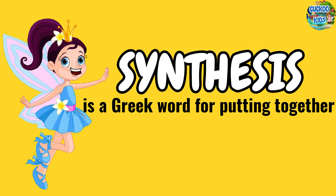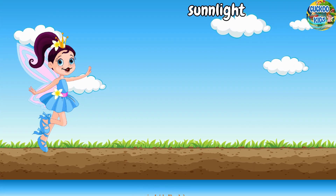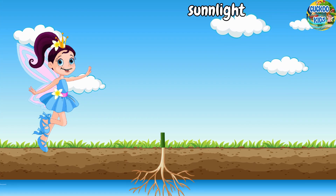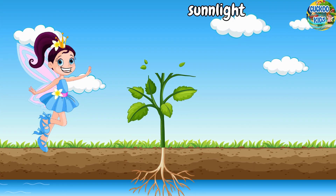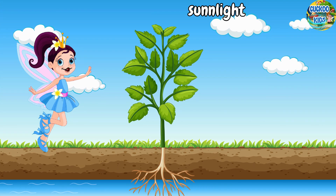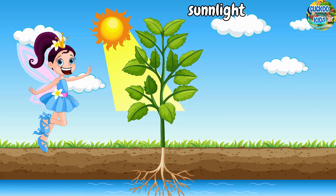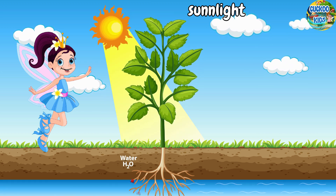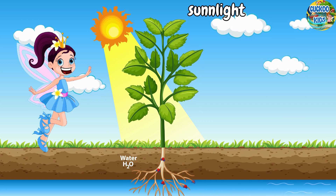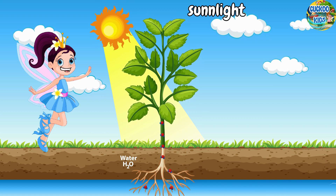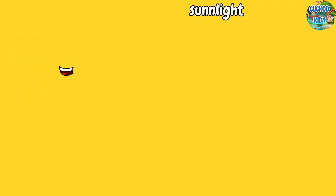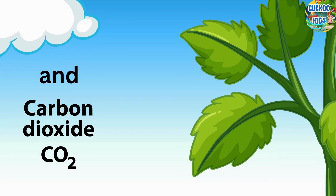Now let's move on. Photosynthesis requires light to put things together. Plants use this process to make their food with the help of sunlight, water, and carbon dioxide.